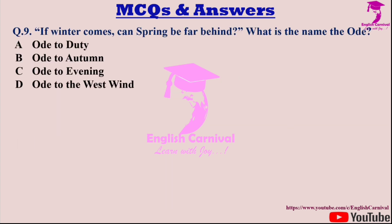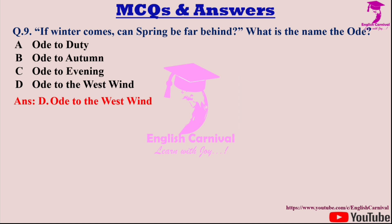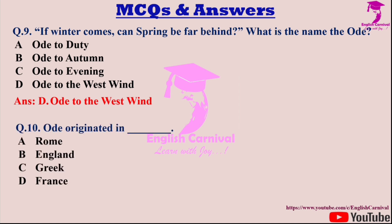Question nine: 'If winter comes, can spring be far behind' — what is the name of the ode in which this line occurs? Options are A: Ode to Duty; B: Ode to Autumn; C: Ode to Evening; and D: Ode to the West Wind. Correct answer is D — Ode to the West Wind by P. B. Shelley.